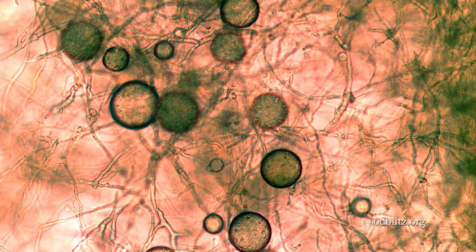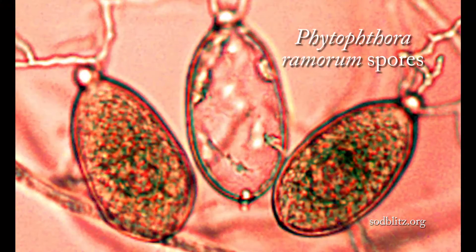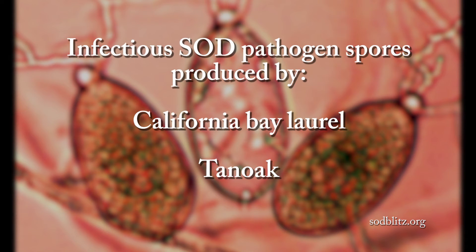The SOD pathogen can infect four species of oaks and the related tan oak. However, spread of the disease is driven by spores carried by the wind that are produced on the leaves of two trees. The most important producer of spores is the California bay laurel and the second most important is the tan oak. Because these are the two most important plants for the spread of Sudden Oak Death, the focus of the Sudden Oak Death blitzes is on how to survey the leaves of these two species.